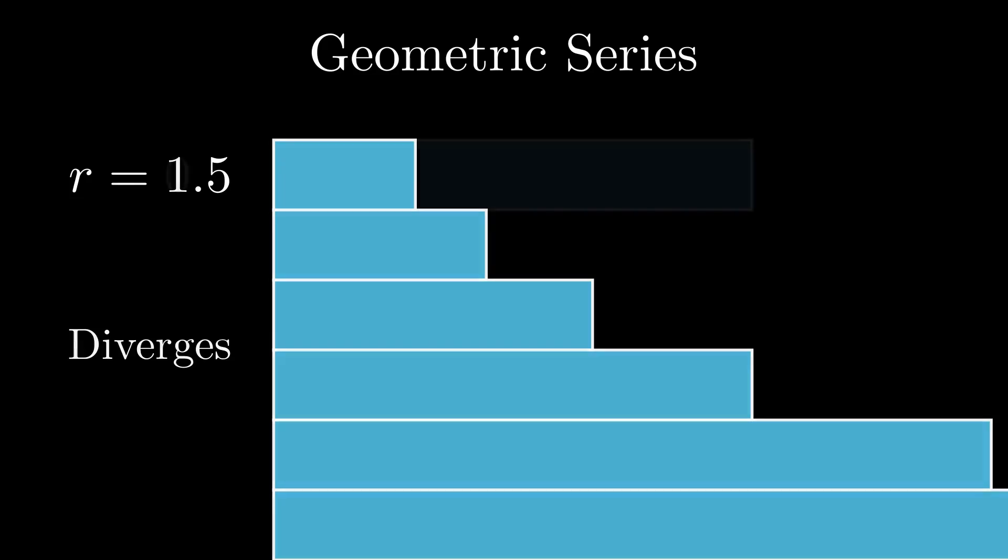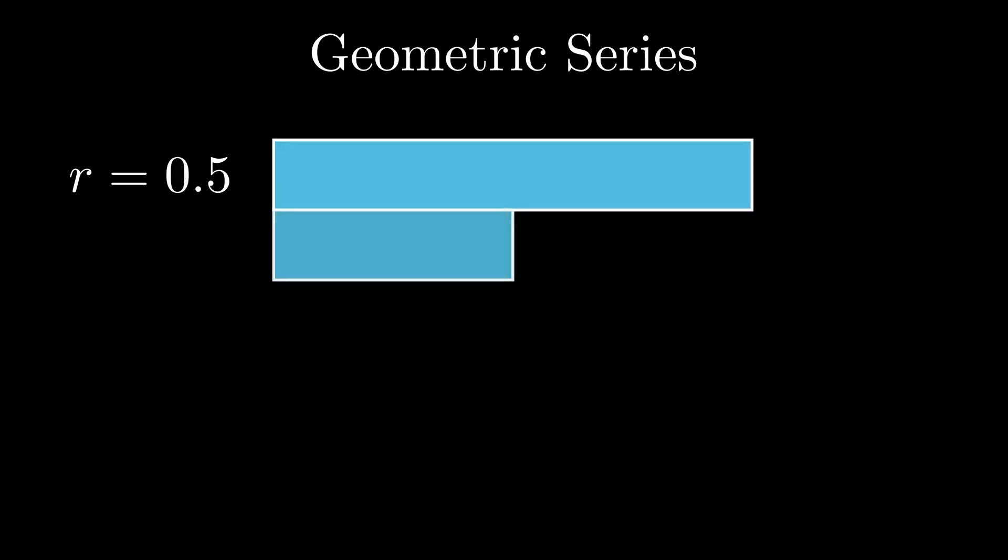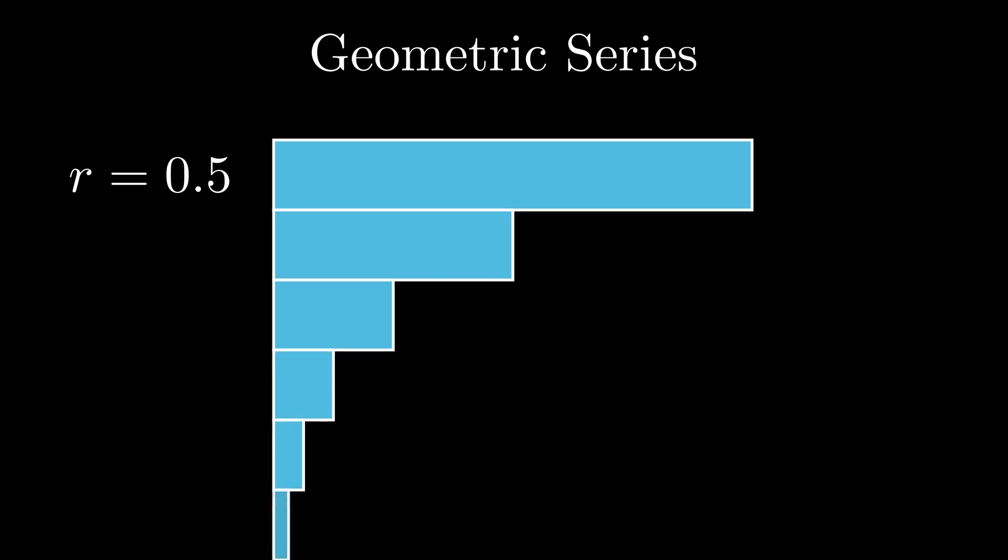However, in the case where you have a common ratio of an absolute value of r less than 1, you're always going to be adding a smaller number, or smaller rectangle. So it will converge in this case.